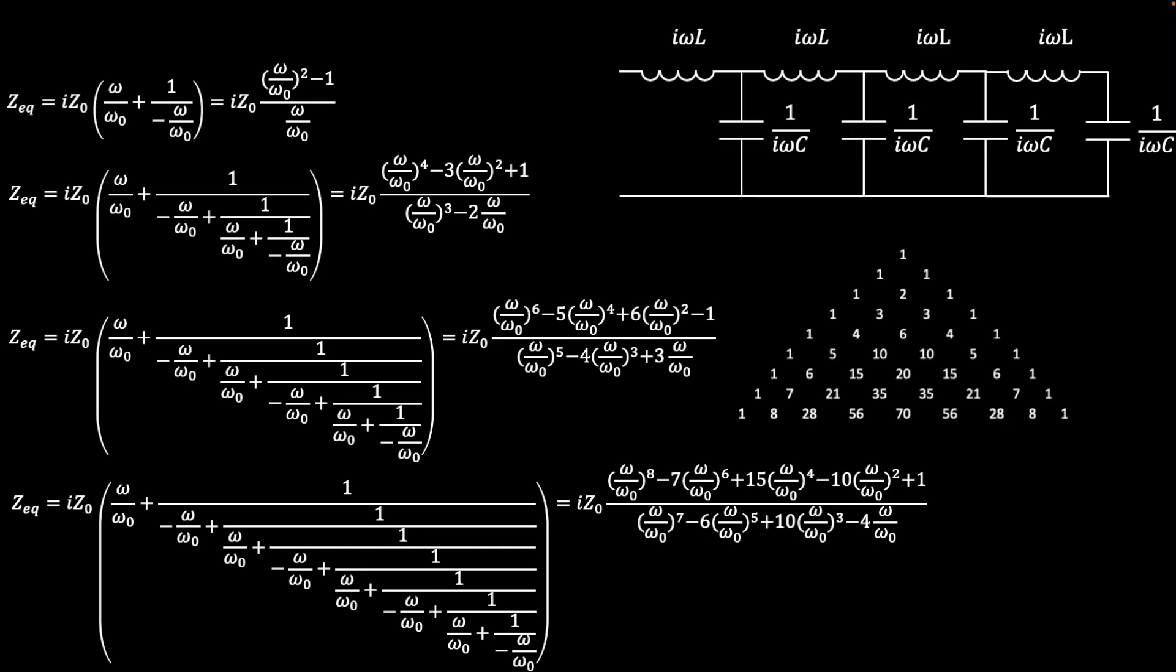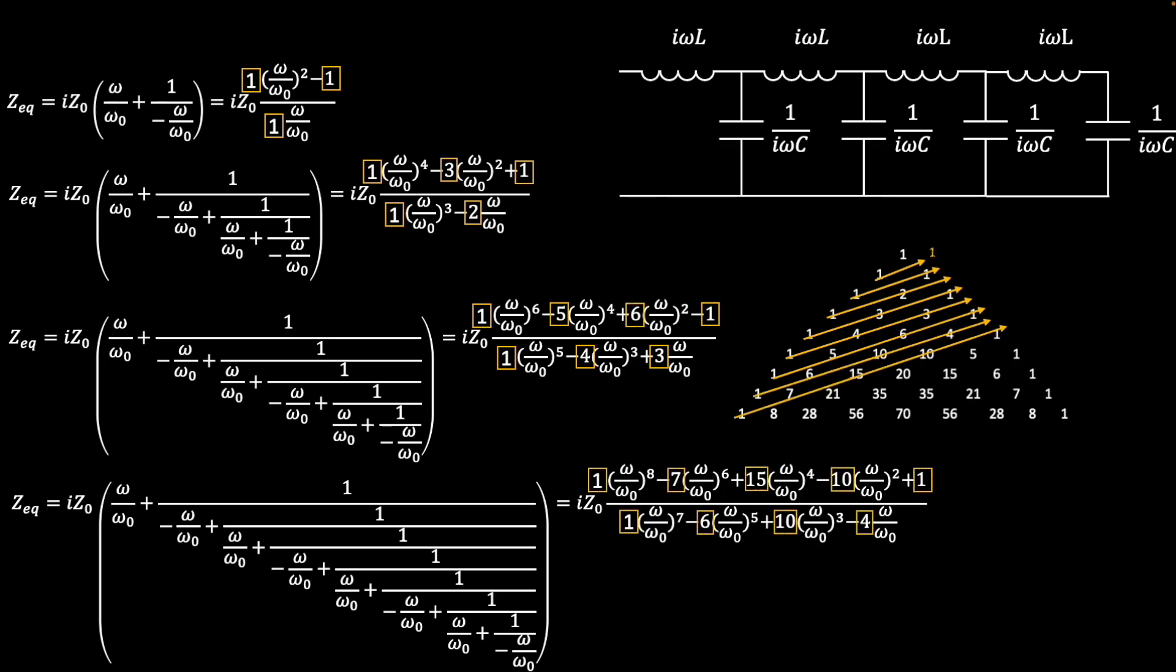They come directly from Pascal's triangle. Looking across the diagonals of Pascal's triangle provides the coefficients that appear in the terms of the collapsed fractions. If the coefficients in each polynomial are added, the Fibonacci numbers are recovered, like in the very first example.